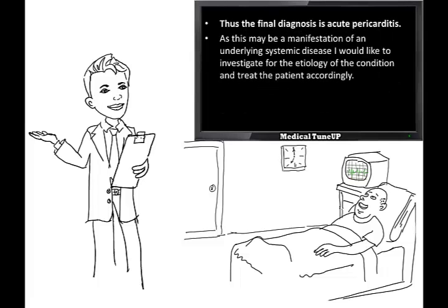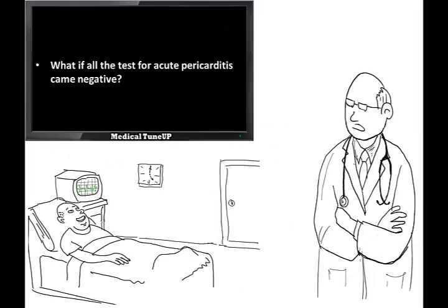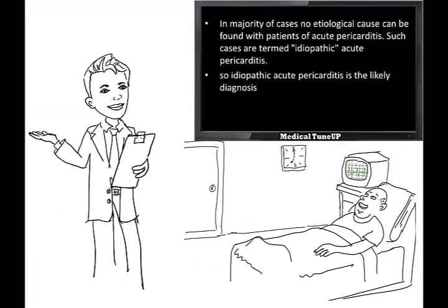In addition, the absence of wall motion abnormalities rules out acute coronary syndrome and the normal appearance of the aorta rules out dissection. Thus the final diagnosis is acute pericarditis. As this may be a manifestation of underlying systemic disease, I would like to investigate for the etiology and treat the patient accordingly. If all tests came negative, in the majority of cases no etiological cause can be found — such cases are termed idiopathic acute pericarditis.